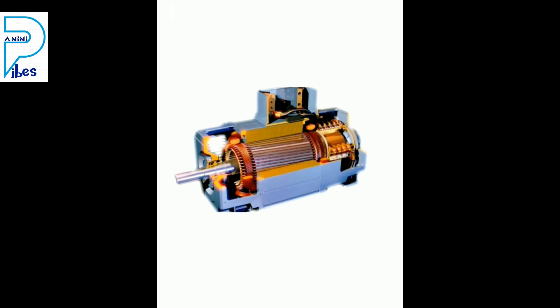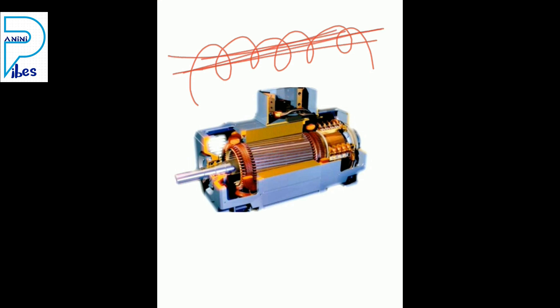Electric generators and dynamos also work based upon electromagnetic induction. Electric generators convert mechanical energy into electrical energy. Electromagnetic induction is the process by which a change in magnetic field in a conductor induces a current in another conductor. For example, when a rod is inserted into and removed from a solenoid, this disturbance in magnetic field induces a current.